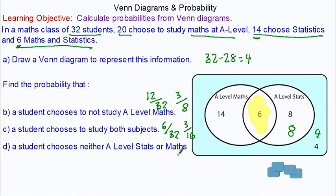Finally, find the probability a student chooses neither A-level maths nor stats. That would be four, which is outside the union, and we can simplify that fraction to make one over eight.